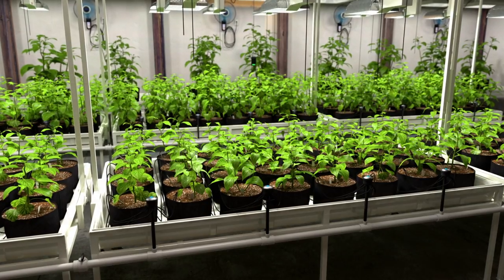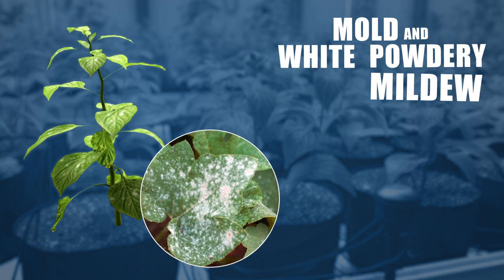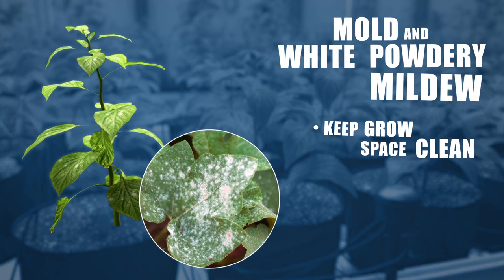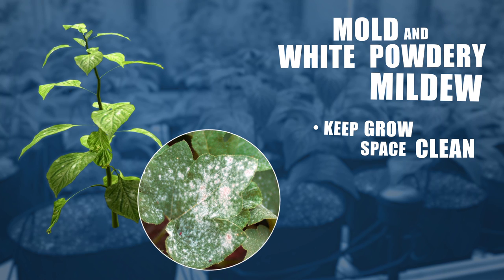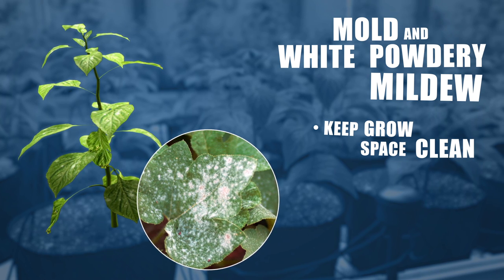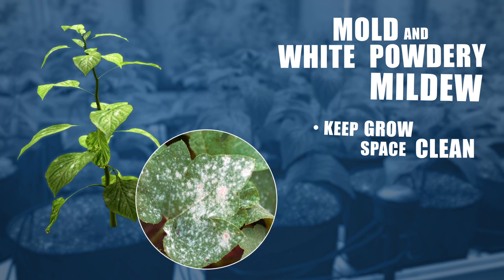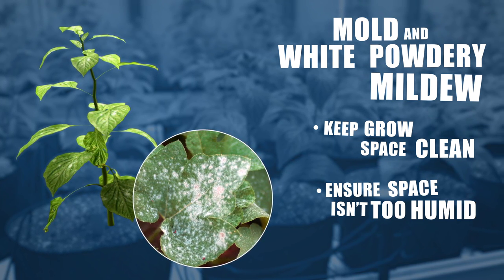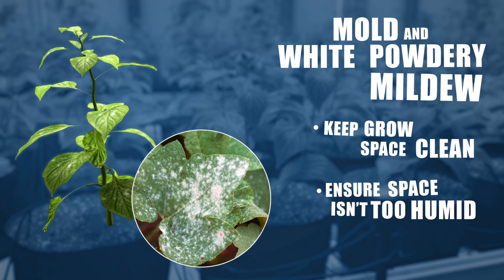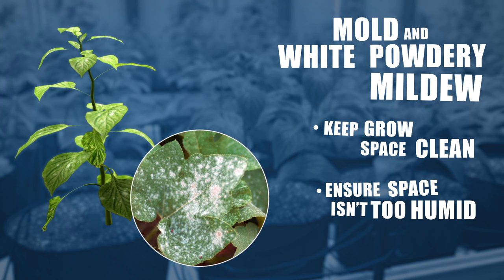Molds and white powdery mildew can wreak havoc on your plants, so keep your grow space clean to minimize the spread of any spores. It's also critical to make sure your space isn't too humid, creating an environment in which mold and mildew thrive. Once mold or mildew take hold, they can spread quickly and ruin your crop.